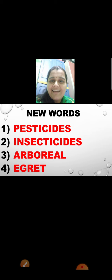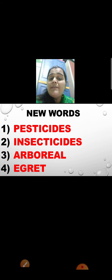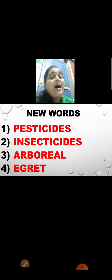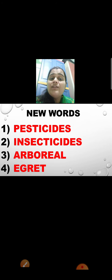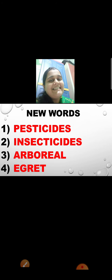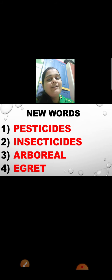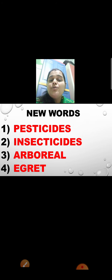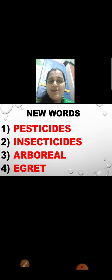Now see the third one: A-R-B-O-R-E-A-L — it is arboreal. Now this is the third word, you might have heard it for the first time. What do you mean by arboreal? It is a term which is used for animals — arboreal animals are those animals which live on the trees. Now see the fourth one: E-G-R-E-T — Egret. Egret is a kind of a bird. I will show you the picture in the video when we watch further. I hope you have made a note of these words in your notebook.